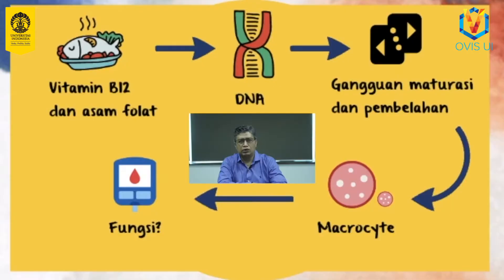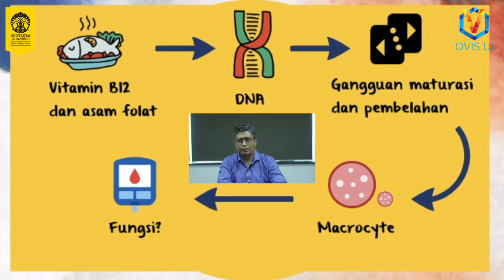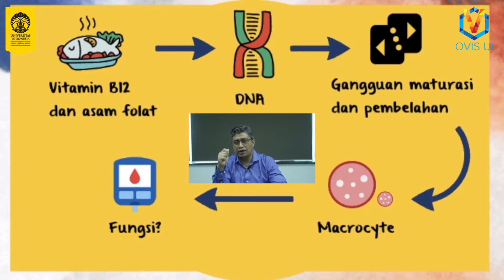EPO mengaktivasi faktor transkripsi GATA-1 dan FOX-1 yang meningkatkan ekspresi gen eritroid pada progenitor hematopoietik. Proses hematopoiesis sel darah merah tidak terlepas dari peran nutrisi, terutama vitamin B12 dan asam folat. Kedua vitamin ini berguna dalam proses pembentukan struktur biensi asam deoksiribonukleat atau DNA. Oleh karena itu ketika kadar kedua vitamin ini kurang, maka pembentukan DNA menjadi abnormal yang menyebabkan gangguan pada maturasi dan pembelahan sel. Akibatnya sel tidak dapat berproliferasi dengan cepat, dan bentuk yang dihasilkan menjadi lebih besar, dinamakan makrosit berbentuk oval, sehingga tidak teratur dan memiliki membran yang abnormal.